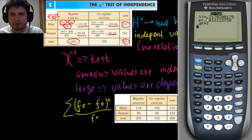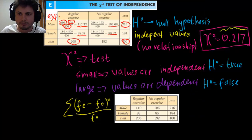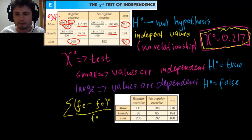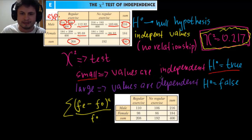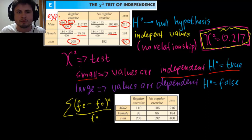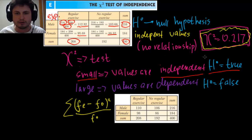What you get is a table with a chi-square value, a p-value, and degrees of freedom (df). Starting with chi-square: it's given as 0.217. A very low chi-square suggests our null hypothesis might be true — values must be independent. In other words, there is no relationship between gender and regular exercise; it doesn't matter whether you're male or female.